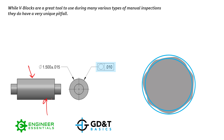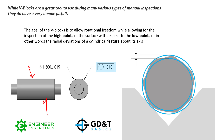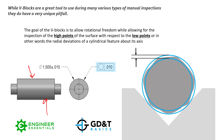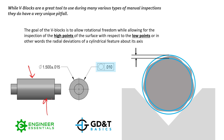So how do we inspect that? A lot of people will put this cylinder — the surface of that cylinder — inside a v-block, then rotate it and record the radial deviations on an indicator. The goal of the v-block is to allow rotational freedom while allowing inspection of the high points with respect to the low points — in other words, the radial deviations of the cylindrical feature about its axis. That's where things kind of fall apart.